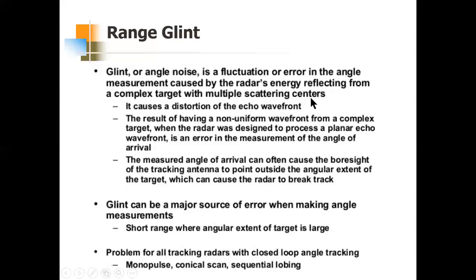Simple targets like a sphere do not exhibit glint because there is only one point of scattering — a sphere is a single-point scatterer. Complex targets with multiple scattering centers, such as aircraft or other moving targets, will cause glint. This glint will degrade the track.